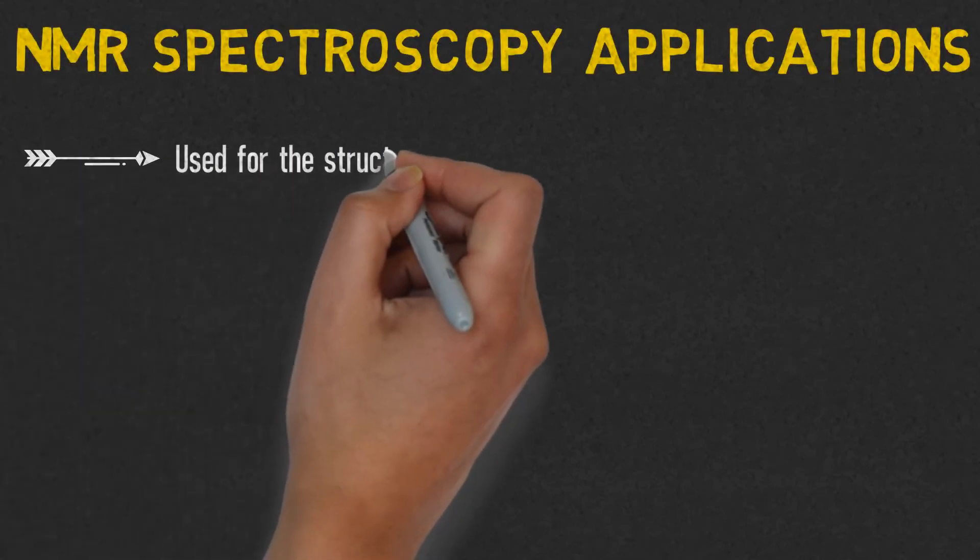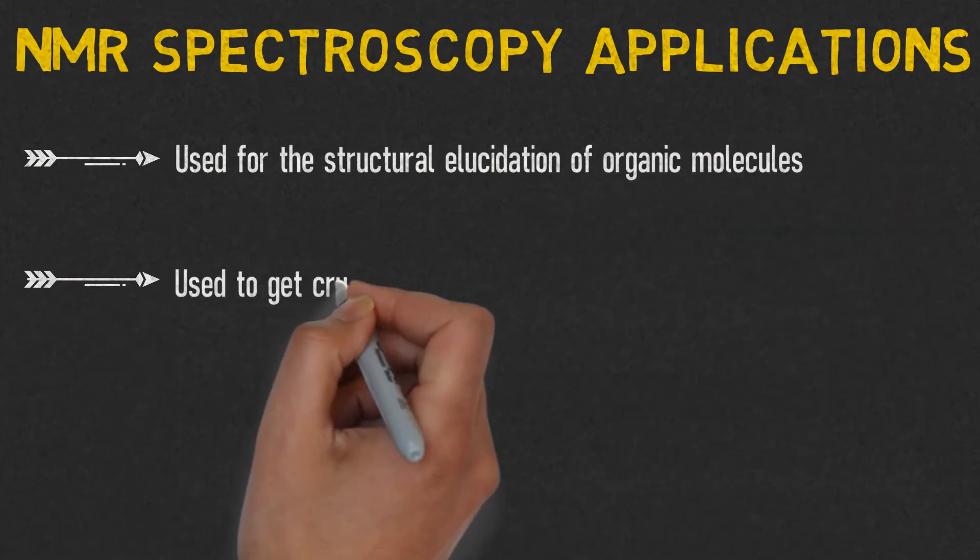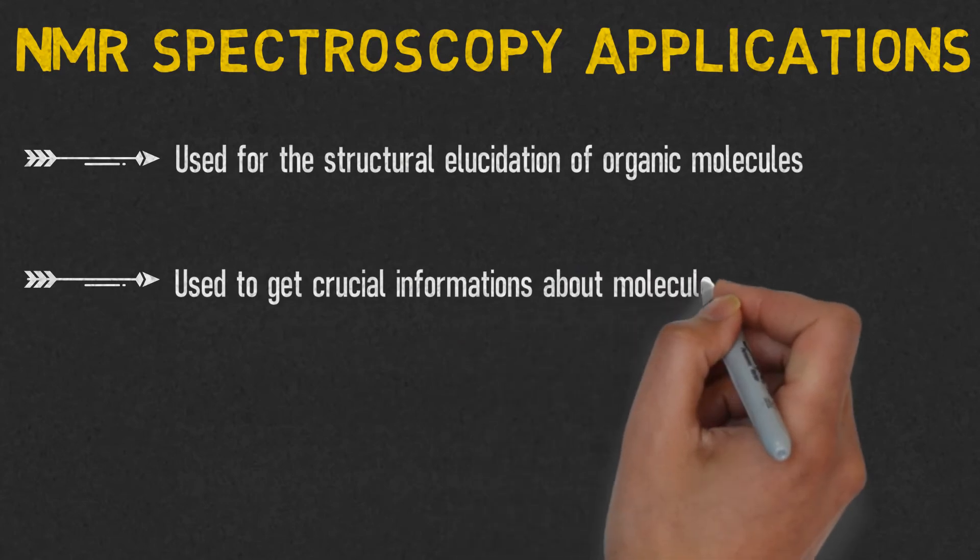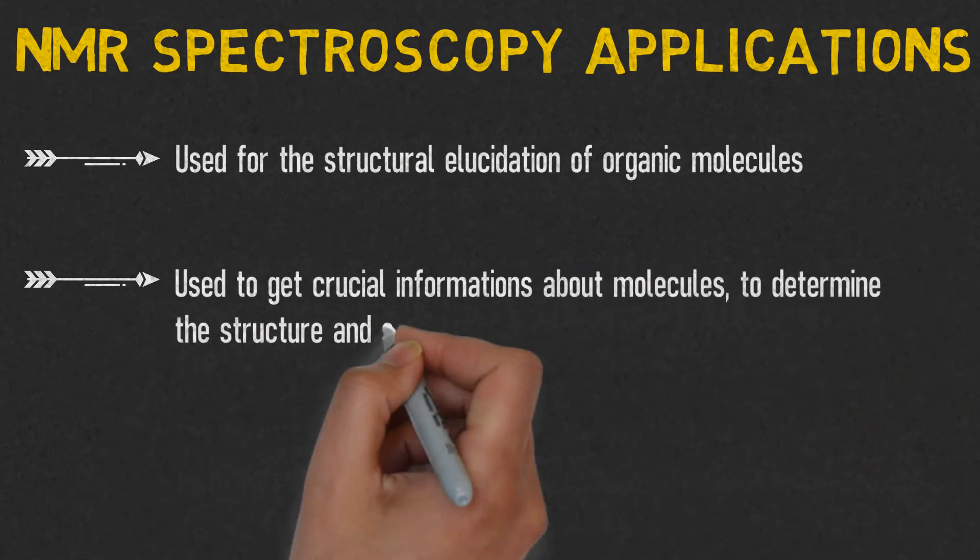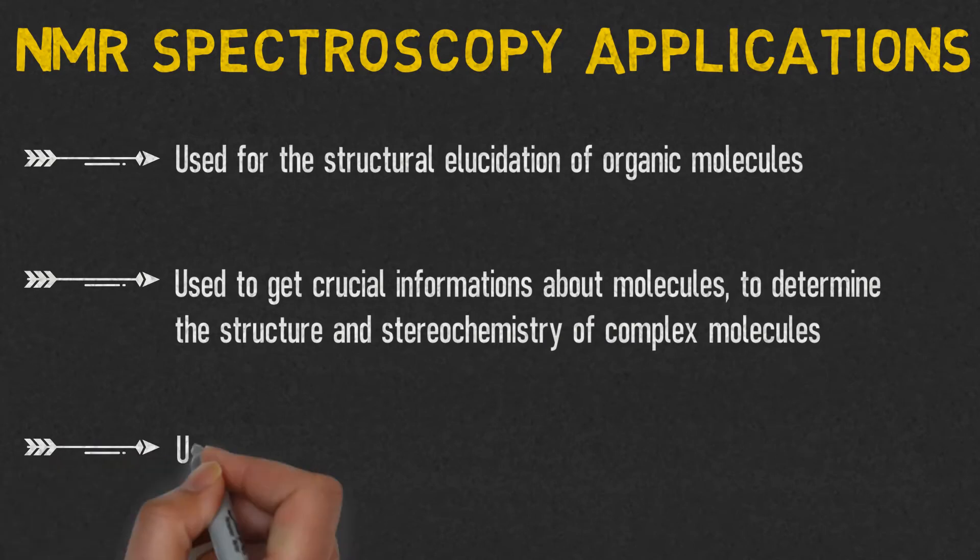Some of the major applications of NMR spectroscopy are: it is used for the structural elucidation of organic molecules, to get crucial information about molecules, to determine the structure and stereochemistry of complex molecules. It is used